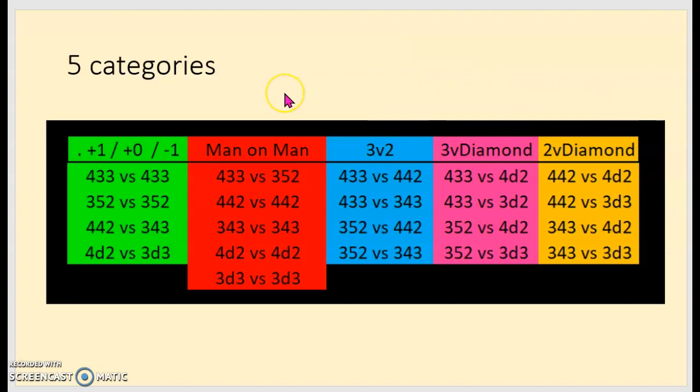The remaining three focus on what's going on in the middle. In our green and red examples, the midfield had parity, as in all the midfielders were marked. But here, in the blue, these are examples where there's three central midfielders versus two. The pink, there's three central midfielders versus a diamond. And then in the orange, two central midfielders versus a diamond. So here are my five categories.